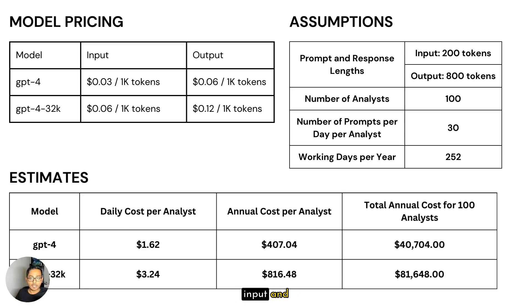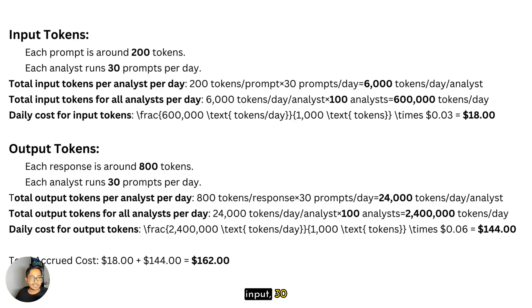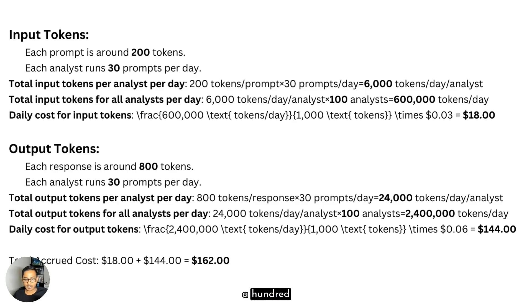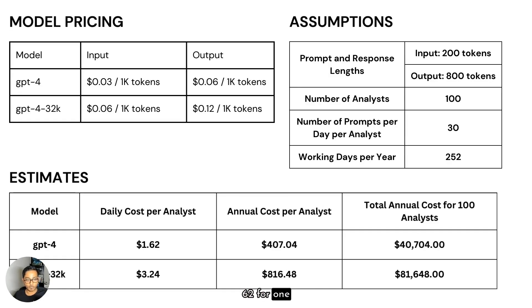As I mentioned, my assumptions are 200 input tokens and 800 output tokens. With 200 tokens input and 30 prompts per day, that comes to 6,000 tokens per day for one analyst. Multiply that by 100 analysts and you get 600,000 tokens per day. Based on the input token cost, that lands us at $18 for 100 analysts for all input tokens. For output, I assumed 800 tokens; multiply by 100 analysts and you get 2,400,000 tokens, which gives us $144. So the total daily cost for 100 analysts is $162 — that is $1.62 per analyst, which gives us those numbers.